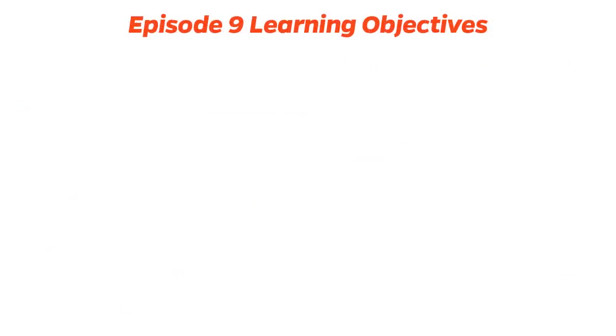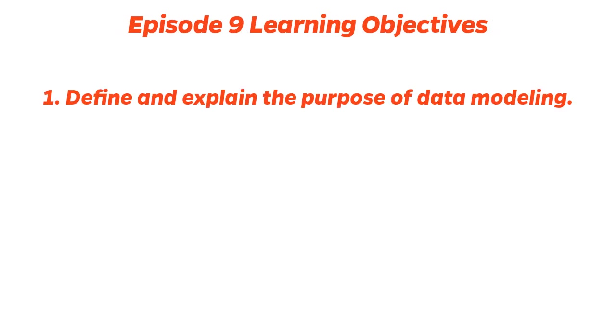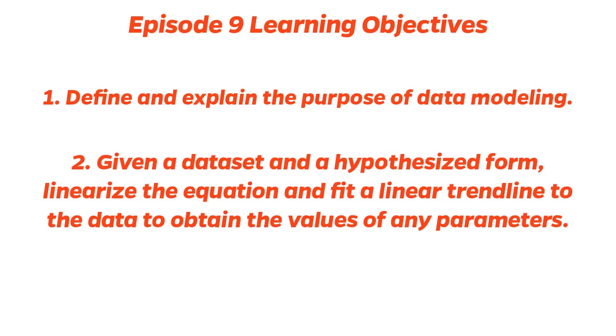Now that this episode is over, you should be able to: 1. Define and explain the purpose of data modeling. 2. Given a data set in a hypothesized form, linearize the equation and fit a linear trend line to the data to obtain the values of any parameters.